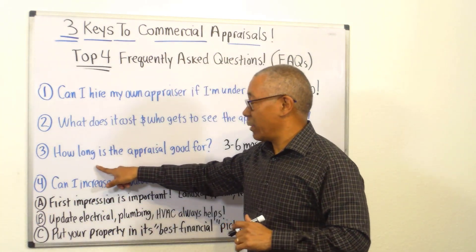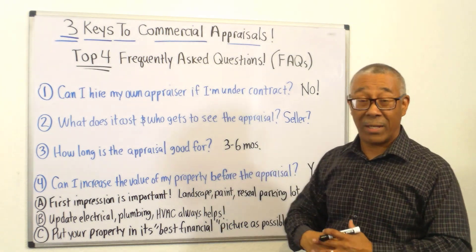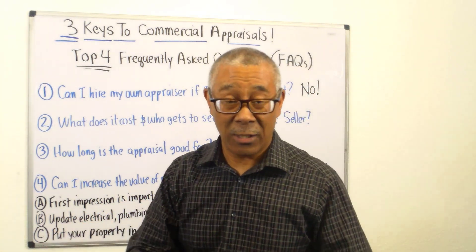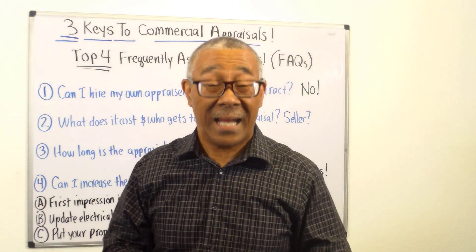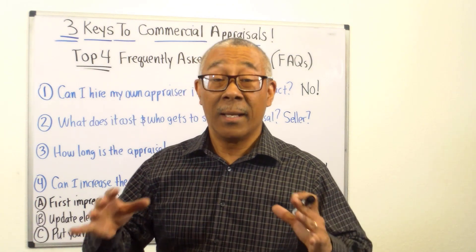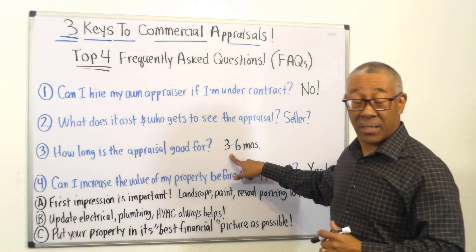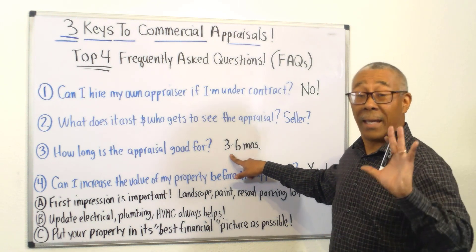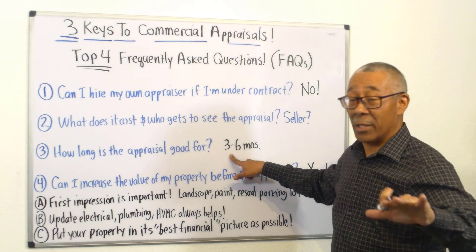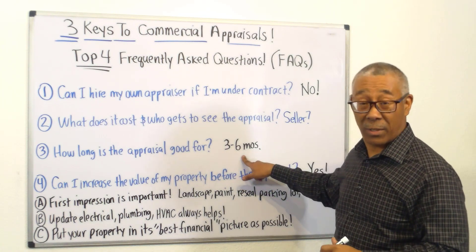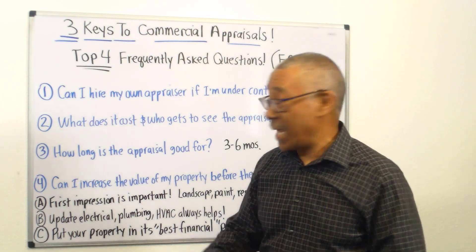FAQ number three: how long is the appraisal good for? A single-family home appraisal is good for 60 to 90 days. For a commercial appraisal, it's about the same — I'd say between three and six months. It depends on the area, the market, and the lender, but on average, three to six months.